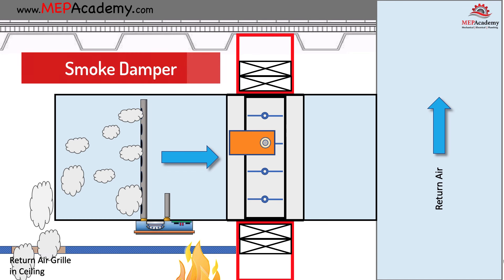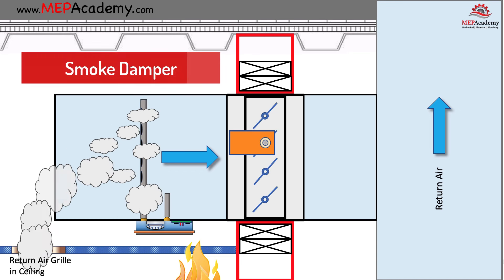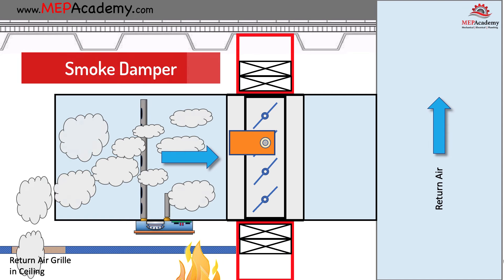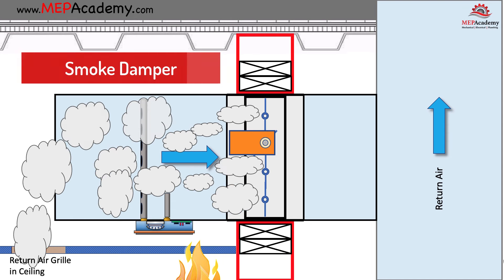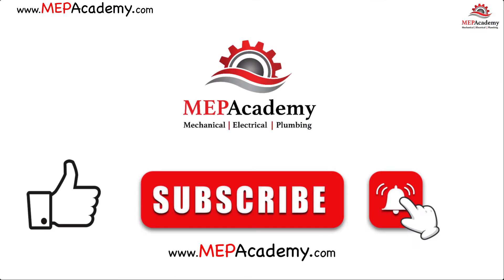There are also fire smoke damper combinations that protect the opening using both techniques. According to the NFPA, a combination fire smoke damper is used when a barrier is both rated for fire resistance as well as designed to restrict the transfer of smoke, and will meet both the fire damper and smoke damper requirements.